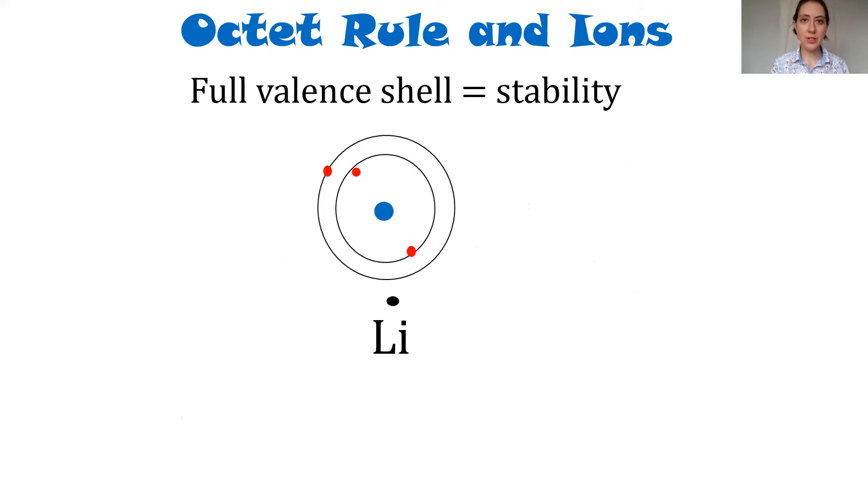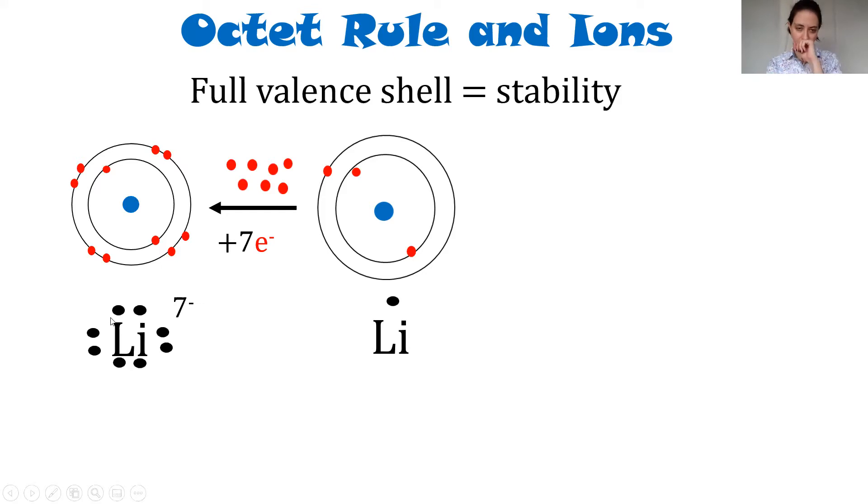Lithium does not have a full valence shell. It actually only has one electron in its valence shell. So in order to achieve that full valence shell, it has to start interacting with other atoms. And it has two options. It can either gain electrons or it can lose electrons. Either way, it's trying to go down to the most stable situation, that full valence shell. So if lithium wants to gain electrons, it's going to need to gain seven. And then it has a full valence shell. That works pretty good. Once it does that, it no longer has the same number of protons and electrons.